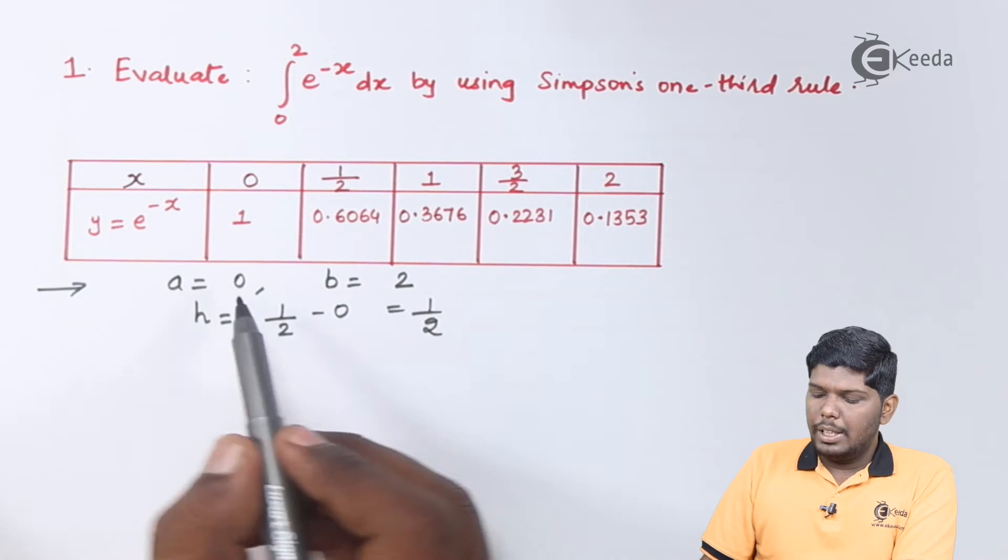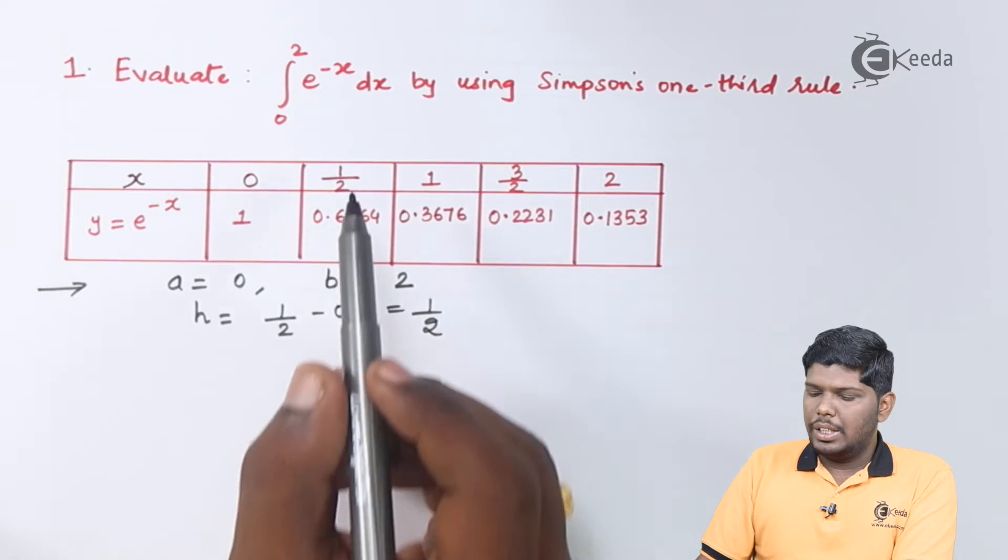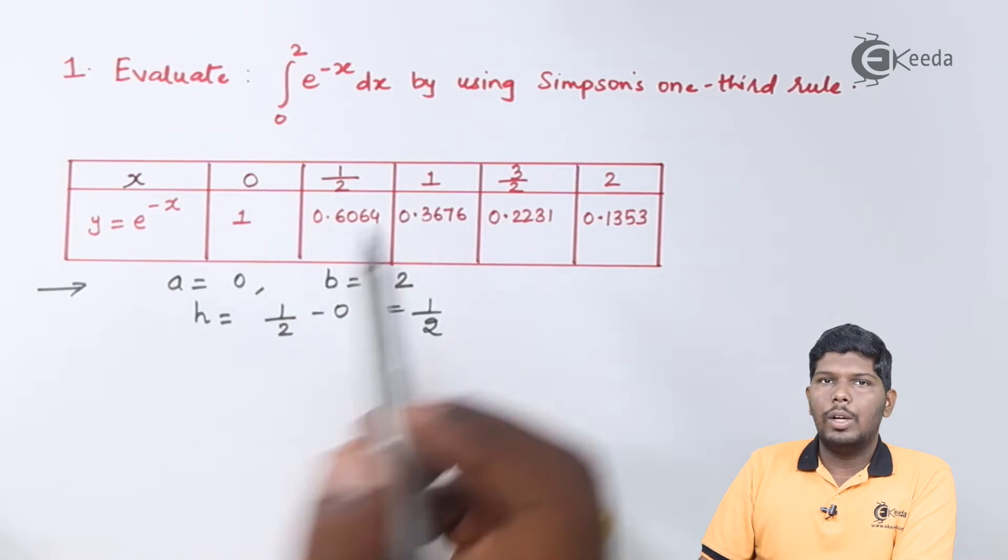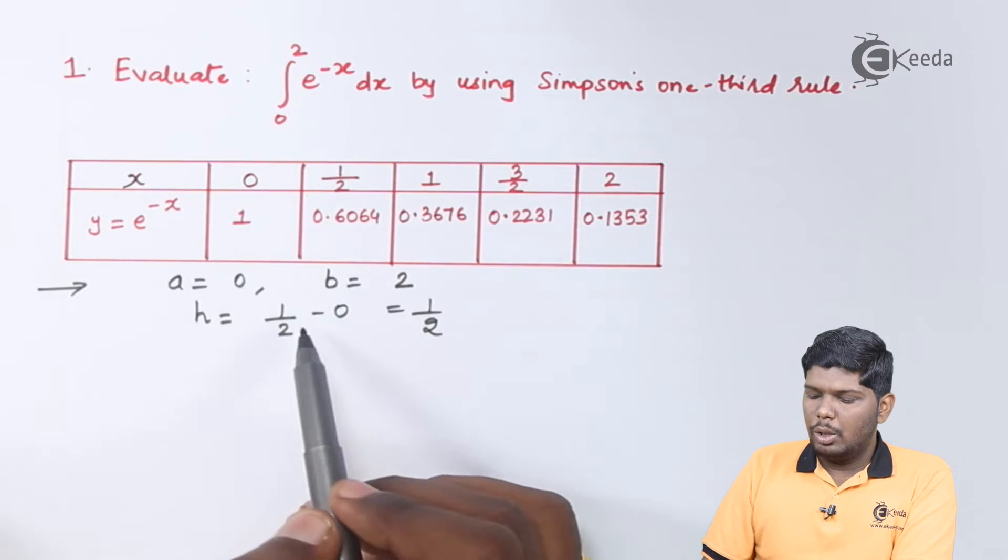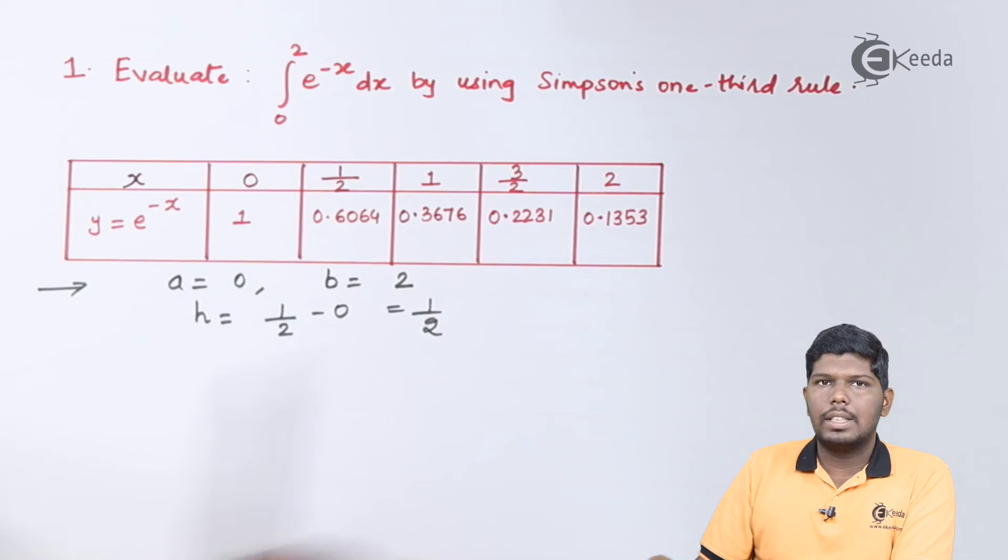The lower limit a is 0, upper limit b is 2, and to get the value of h you can subtract any two consecutive values of x. So half minus 0 will give you half, or you can say 1 minus half will also give you half.